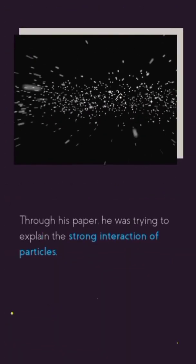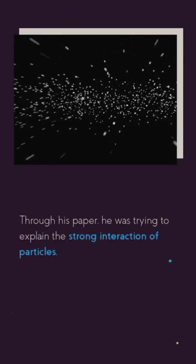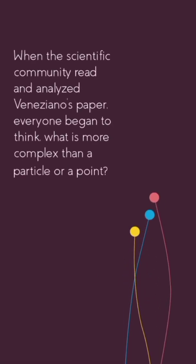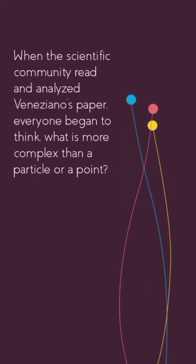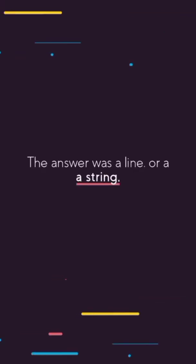Through his paper, he was trying to explain the strong interaction of particles. When the scientific community read and analyzed Veneziano's paper, everyone began to think, what is more complex than a particle or a point? The answer was a line, or a string.